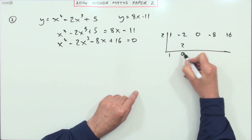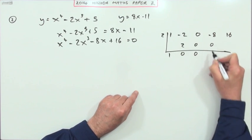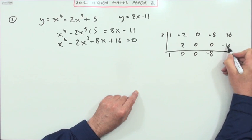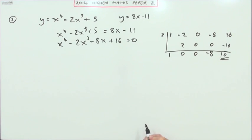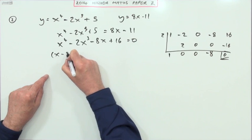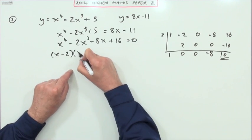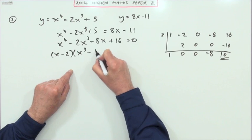1, 2, 0, then that's 0, it's still 0, 0. That's negative 8, that's negative 16, and that did work. So, I know that I've got x minus 2 as a factor times, and this is the interesting bit, x cubed minus 8.